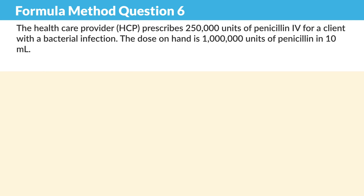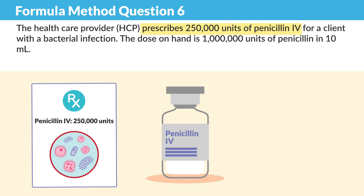Moving on to question six. The healthcare provider prescribes 250,000 units of penicillin IV for a client with a bacterial infection. The dose on hand is 1 million units of penicillin in — key number — 10 mLs.